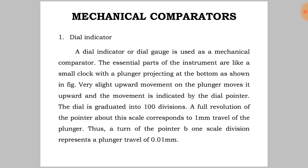A dial indicator or dial gauge is used as a mechanical comparator. The essential parts of the instrument are like a small clock with a plunger projecting at the bottom. A very slight upward movement on the plunger moves it upward and the movement is indicated by the dial pointer. The dial is graduated into 100 divisions, and a full revolution of the pointer corresponds to 1 mm travel of the plunger.